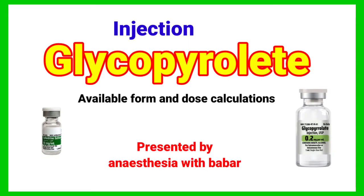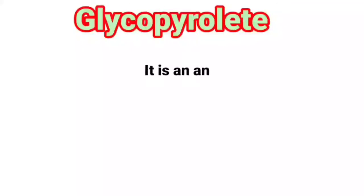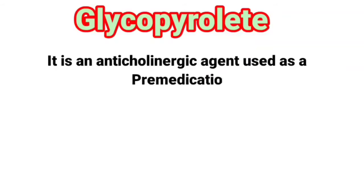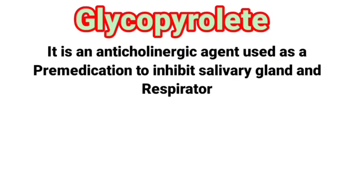Injection Glycopyrrolate: Available Form and Dose Calculations, presented by Anesthesia with Babar. Glycopyrrolate is an anticholinergic agent used as a pre-medication to inhibit salivary gland and respiratory tract secretions.